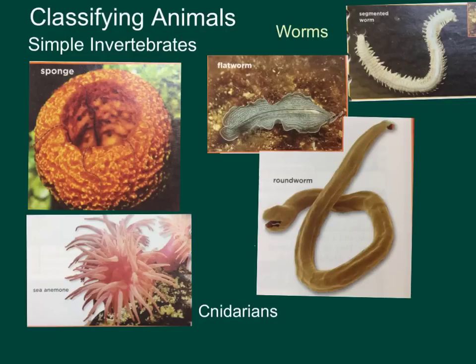Roundworms are nematodes. They have a simple digestive system and nervous system. You really find them inside of other animals — so if you take your pet to the vet and they say they've got worms, it's probably these guys. Flatworms also live inside of other animals, by the way. Roundworms have a one-way digestive system, so what comes in one way goes out the other way.